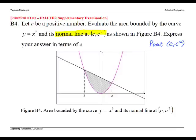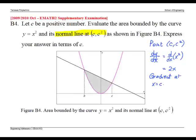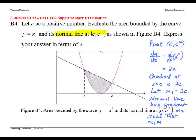Recall that the gradient for the curve y equals x squared is given by dy dx which is 2x. So the gradient of the tangent line at x equals c is 2c. Let's call this m1. Now the normal line with gradient m2 is such that m1 times m2 equals negative 1. Therefore m2 is minus 1 over 2c since m1 is 2c.